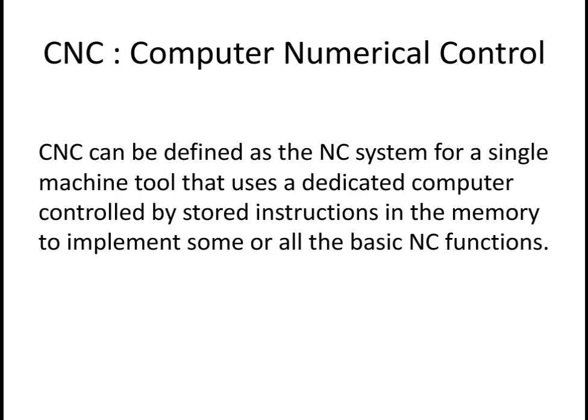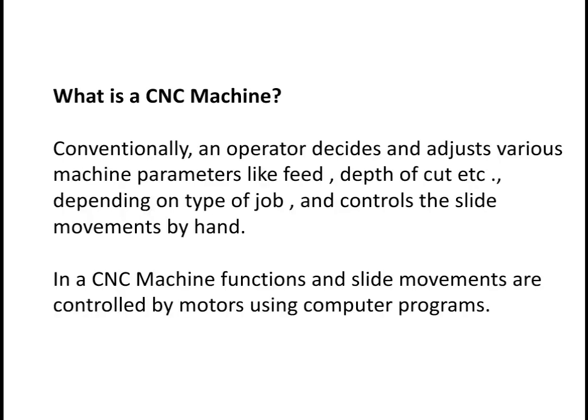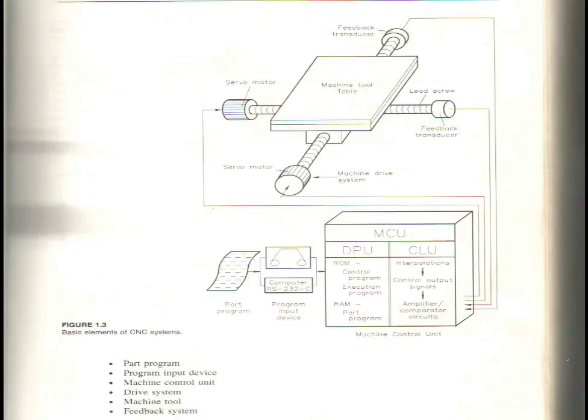What is a CNC machine? Conventionally, an operator decides and adjusts various machine parameters like feed, depth of cut, etc., depending on the type of job, and controls the slide movements by the use of hand. In a CNC machine, slide movements are controlled by motors using computer programs.